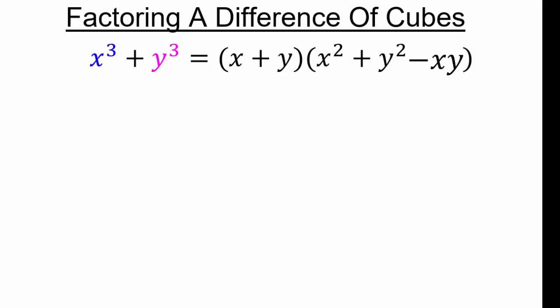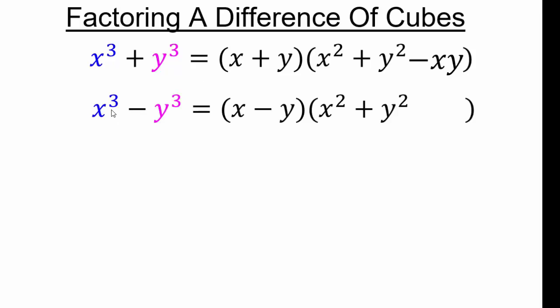Now that we have factoring a sum of cubes, we'd like to know what happens with a difference of cubes. As a mathematician, we'd like to take advantage of our earlier work. Looking at x cubed plus y cubed — if I could replace y with a negative y, I get negative y times negative y times negative y which gives negative y cubed. So that would be difference of cubes. In our sum of cubes formula, replace y with negative y.